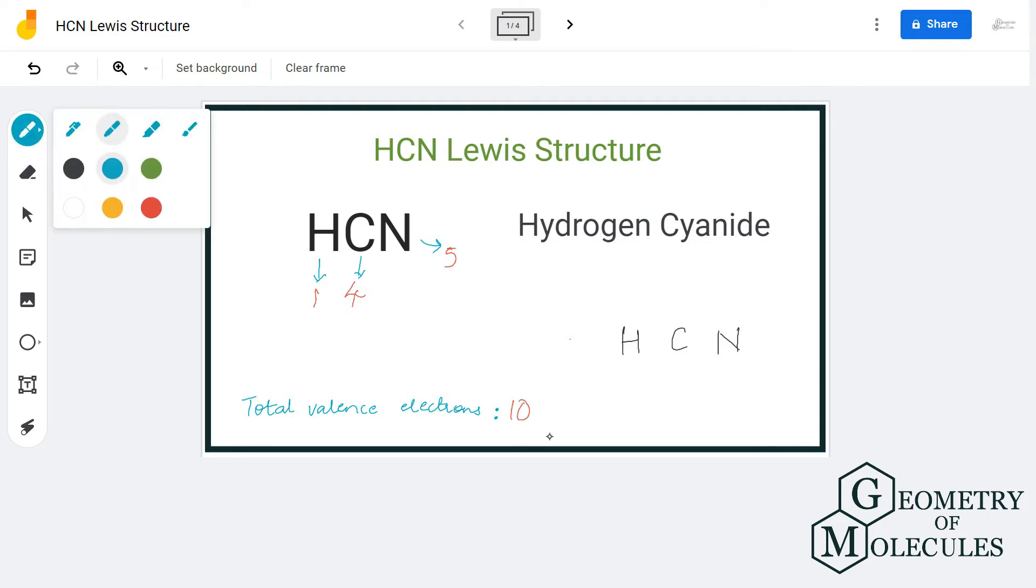Now that we know the number of valence electrons for HCN, let's start placing atoms and its electrons. We'll place carbon in the center as it's the least electronegative atom in this molecule. The hydrogen atom will go on the outside because it can never take the central position in a Lewis structure. Similarly, nitrogen will also be placed on the outside.